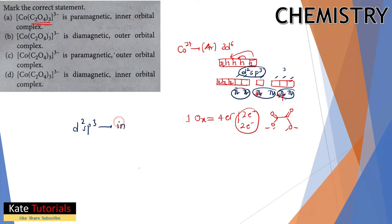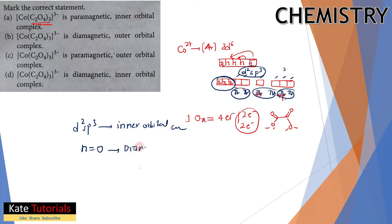Since all electrons are paired in the d²sp³ hybridized Co³⁺ complex, the number of unpaired electrons is zero. Therefore, this complex is diamagnetic.